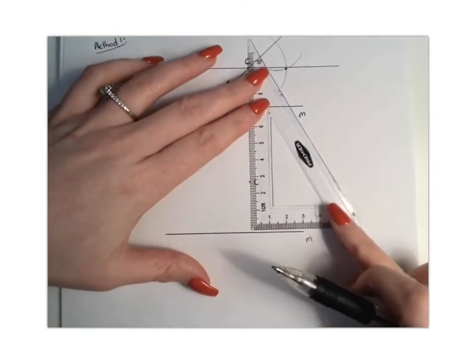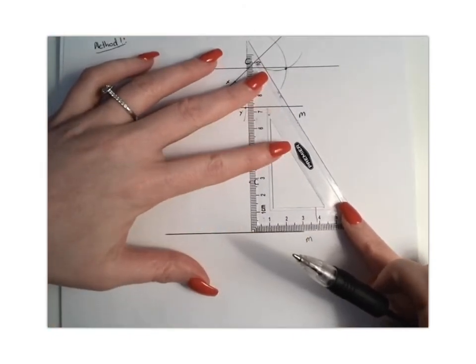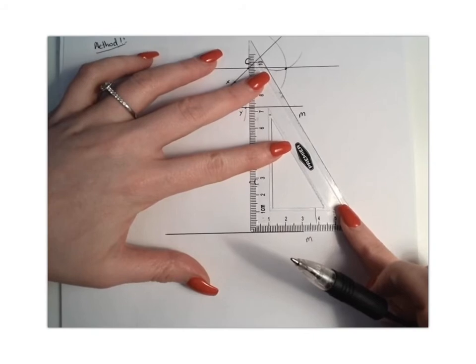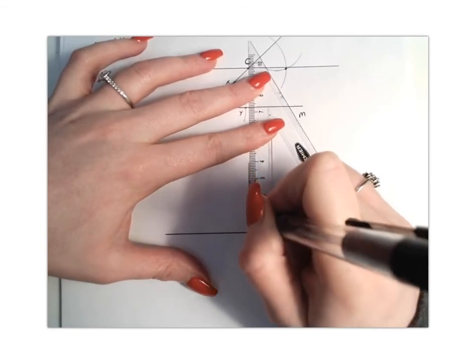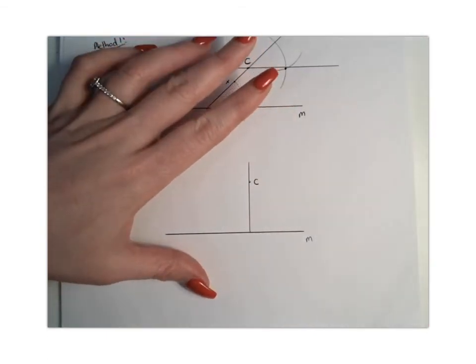So that means we're basically going to line this up with our line M and our point C, and we're going to draw a perpendicular line, like so.